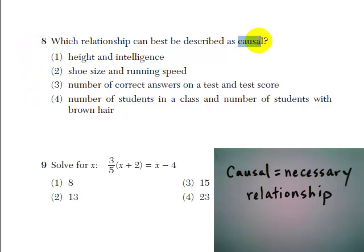Now, the important word to remember is causal. Over here I've written down not a complete definition, but causal when you see that means a necessary relationship. That means when two things are causal, one always kind of goes with the other.